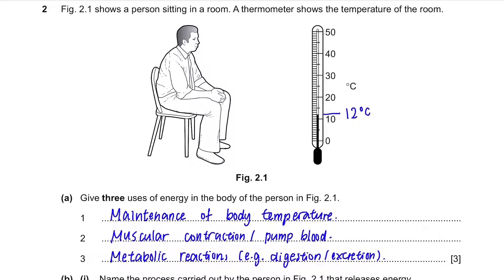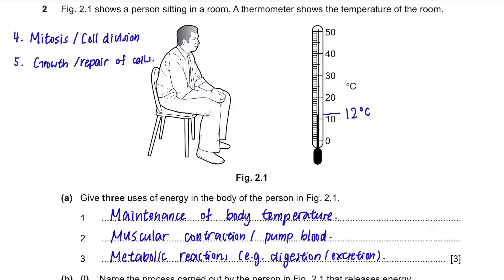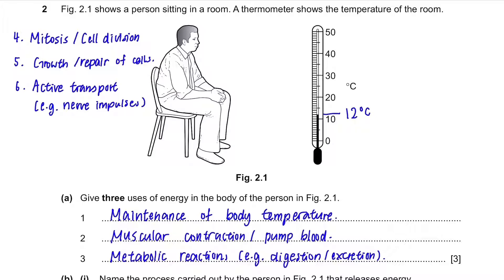Our cells are going through mitosis or cell division for growth or repair of body cells. You can also say that active transport is being carried out — for example for nerve impulses to pass — and energy is required for it. There are more than three points here, but it is good to know all of them because you never know how they will twist the question in the exam.